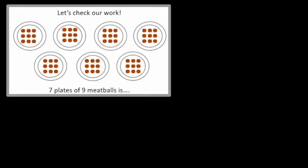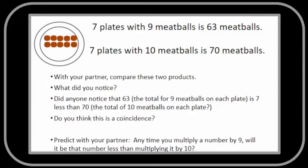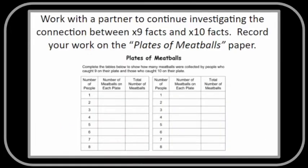In this example, one student creates 7 plates of 9 meatballs, while another creates 7 plates of 10 meatballs. They then compare their products and make conclusions. The connections then lead to continued practice and reinforcement.